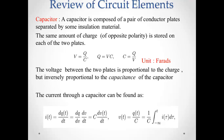Now let's look at the current-capacitance relation. I of T is equal to C into dV by dt. Or, V is equal to 1 by C integral of i dt.